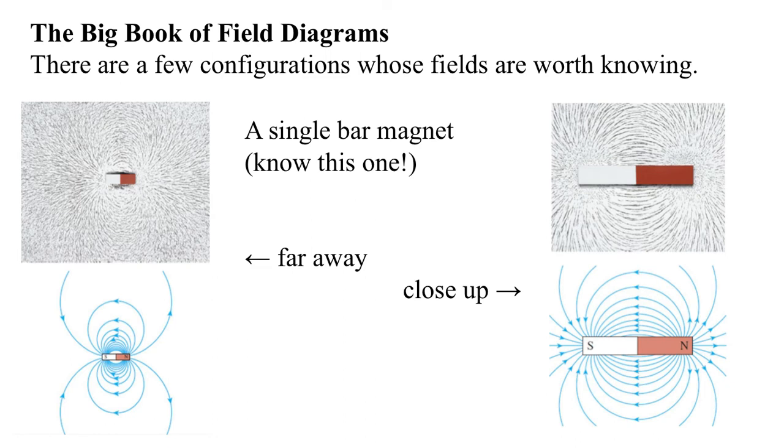All right, the big book of field diagrams. So there are a few configurations whose fields are worth knowing. This is things that you're going to want to recognize. So the first is a single bar magnet. And you do want to know this one. This is what we call a magnetic dipole moment, coming from a traditional cheap magnetic bar here. And we get something like this.